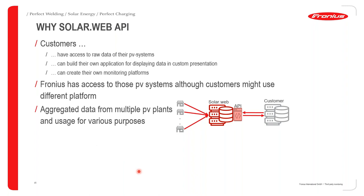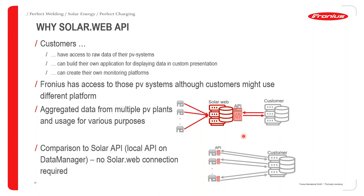Looking at the API between a customer application and SolarWeb: all aggregated data from multiple PV plants and usage patterns can be queried using the API. Alternatively, without using Fronius SolarWeb, you have a local API on the data manager. Even without a connection to Fronius SolarWeb, you can query data directly or locally from the Fronius Data Manager — though we prefer you use the SolarWeb API for better Fronius support.